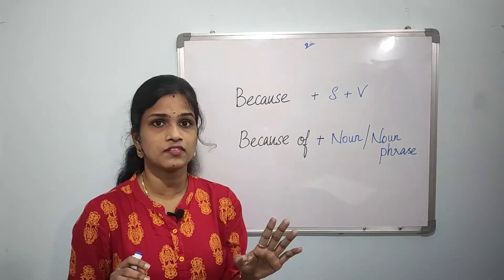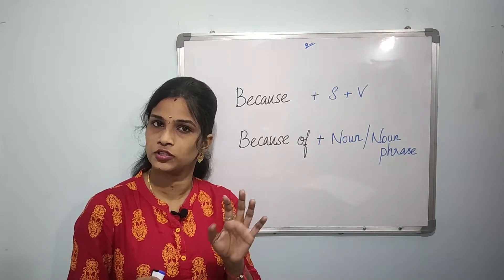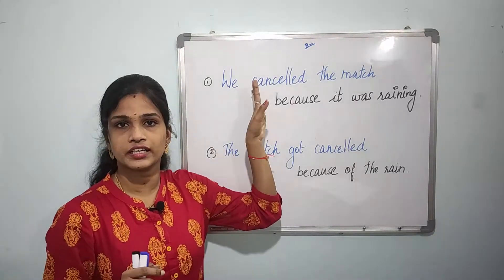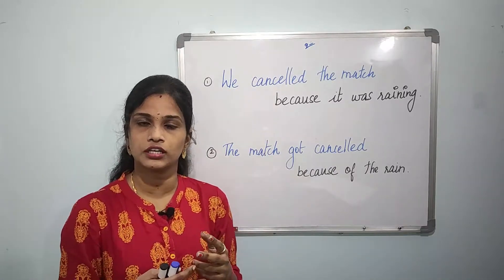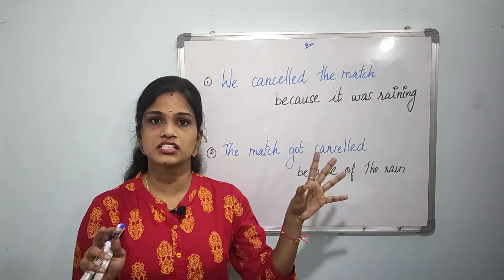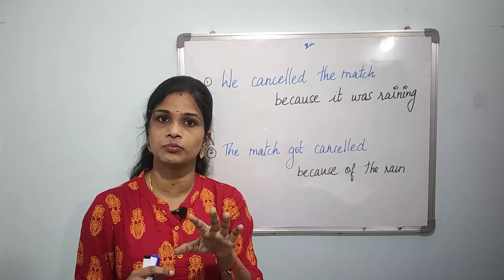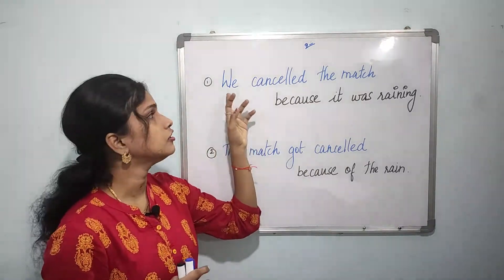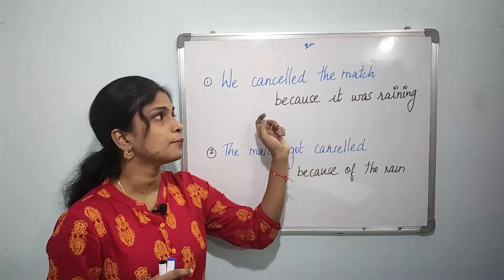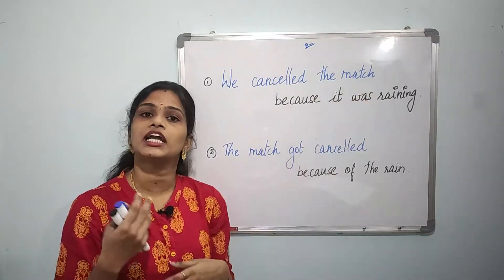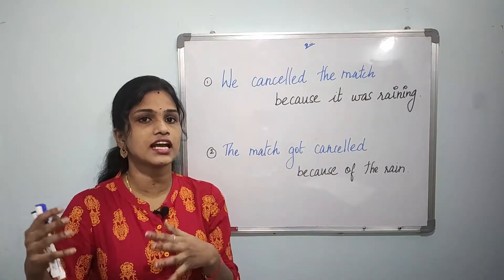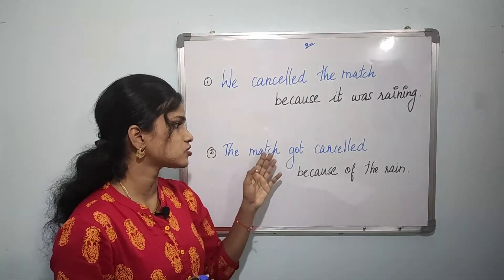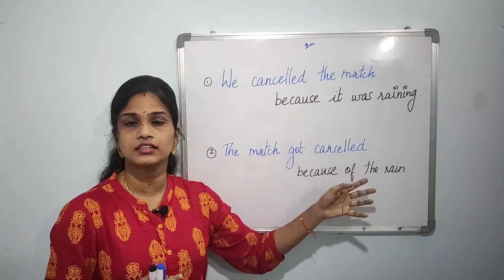If you think about the preposition, how to use the verb — so, for example: when it is raining, the match will be cancelled. First example: 'We cancelled the match because it was raining.' Second example: 'The match got cancelled because of the rain.'